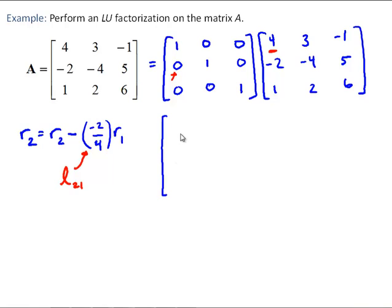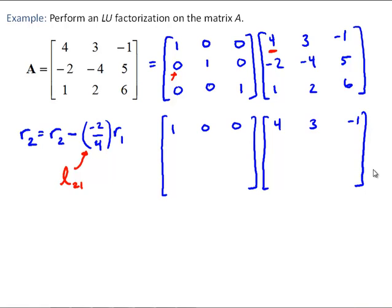Writing that result: our first row is unchanged — [4, 3, −1]. We put −1/2 in our lower triangular matrix as L21, and carrying out the subtraction we end up with [0, −2.5, 4.5] in the second row of the upper triangular matrix. Then for row 3, the elimination factor is 1/4 times row 1, giving us L31. After executing that operation, we get [0, 1.25, 6.25] in the third row.